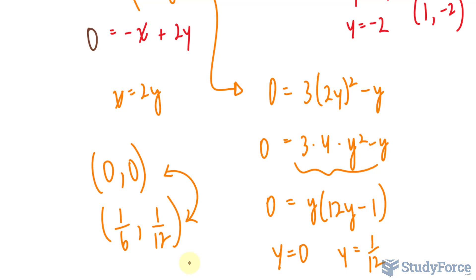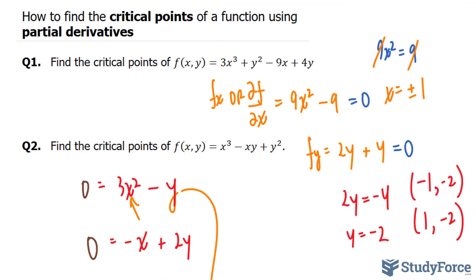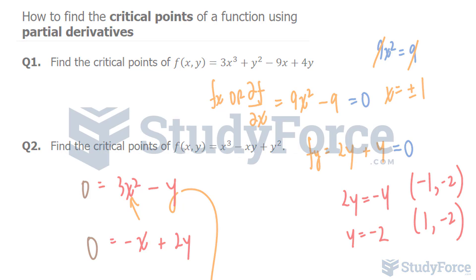These represent your critical points. And there you have it. Two examples on how to find the critical points of a function using partial derivatives.